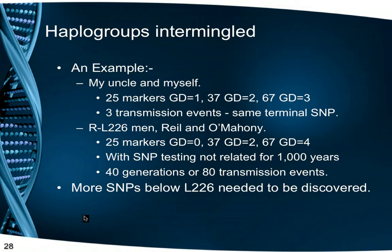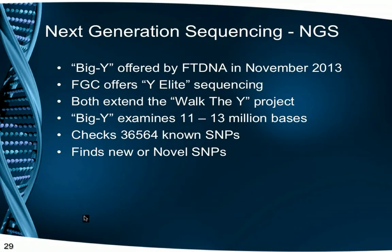This explains why attempting to fit all the Irish Type 3 men into groups had limited success, and we needed to find SNPs to actually define each branch. In November 2013, FTDNA launched Next Generation Sequencing, NGS, extending the concept of Walk the Y, and calling this project Big Y.